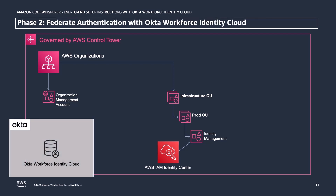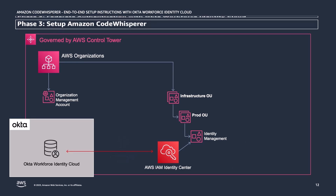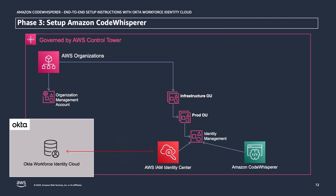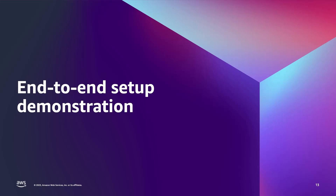Next, we will configure Identity Center to use Okta Workforce Identity Cloud as its identity provider. The first step is to establish a SAML trust relationship between the two by exchanging certificates and other configuration data. Then we will enable Okta to push user and group information to Identity Center for use in access provisioning. Once users and groups have populated in Identity Center, we will set up CodeWhisperer in the same account and assign permissions to the users who are likely to be writing code. Now that you have a high-level idea of the configuration steps, let's jump right into the demonstration.